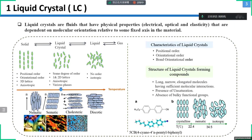Different kinds of liquid crystals show different textures under a polarizing microscope after their order is destroyed. The structure of liquid crystal forming compounds consists of long, narrow, elongated molecules having sufficient molecular interactions, with the presence of unsaturation and absence of bulky functional groups.